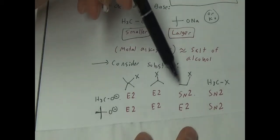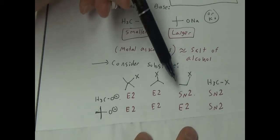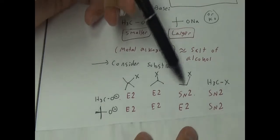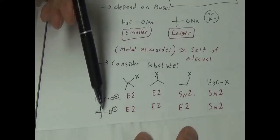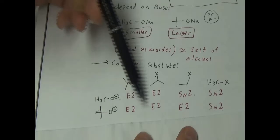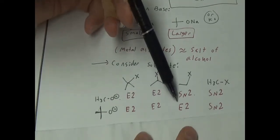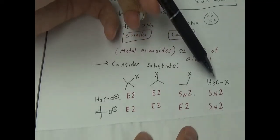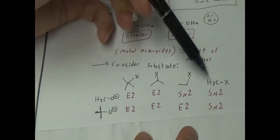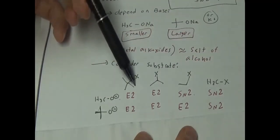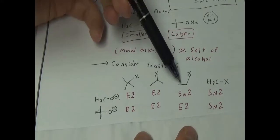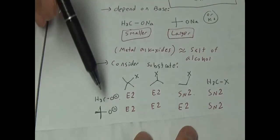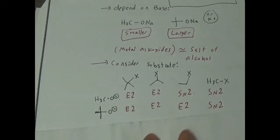For primary, you have a gray area, where the small alkoxides actually undergo a nice SN2 — the oxygen attacks, the carbon kicks off the leaving group. Whereas the large alkoxide, like tert-butoxide, gives you an E2 elimination. For methyl, where there's no neighboring proton — because with E2 reactions you always take off a neighboring proton — you always get an SN2 for either small or large alkoxides.